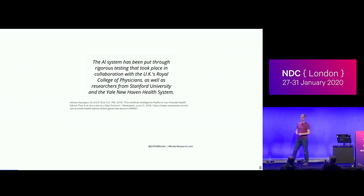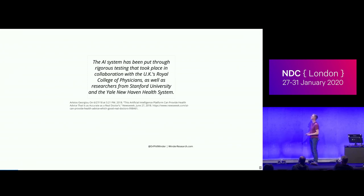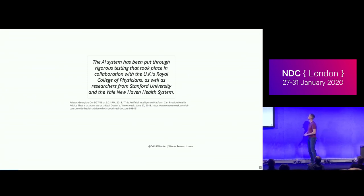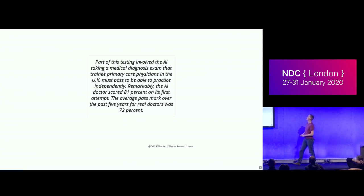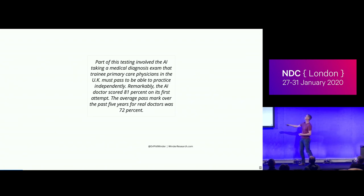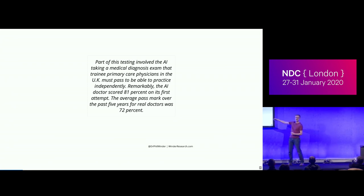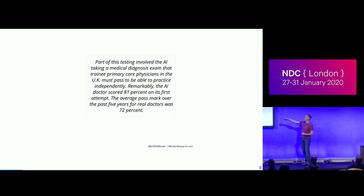But the marketing department got hold of some of the results and started putting out reports like this: 'The AI system has been put through rigorous testing in collaboration with lots of very important-sounding people and places.' Part of this testing involved the AI taking a medical diagnosis exam that a trainee primary care physician from the UK must pass to practice independently. Remarkably, the AI doctor scored 81% at its first attempt, compared to an average pass mark of 72% over five years. But we're comparing apples and oranges: a massive average over possibly tens of thousands of people versus a single test result with a slightly higher number.